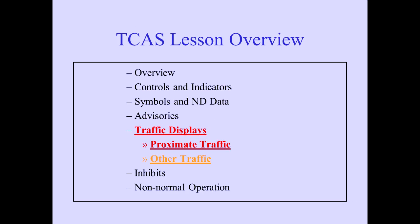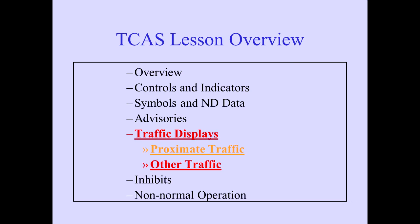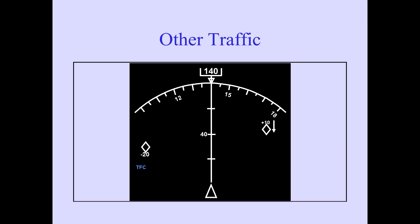Let's look at traffic displays. TCAS displays symbols for proximate traffic and other traffic on the ND, alerting you to other transponder-equipped aircraft in your vicinity. Aircraft close to your airplane but predicted to maintain safe separation are displayed as proximate traffic. Other traffic is well away from your aircraft and displayed on the ND when within the selected display range.